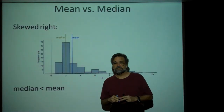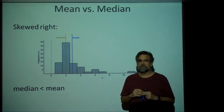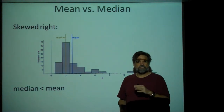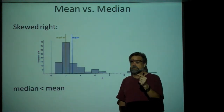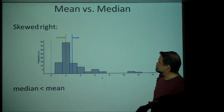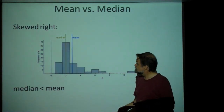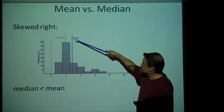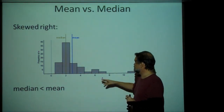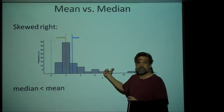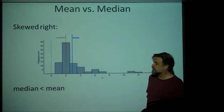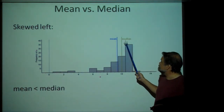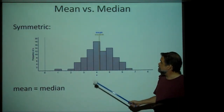We've looked at two ways of describing the center of a distribution: the median and the mean. Usually they're close together, but it's important to notice when one is bigger than the other. Here we have a distribution that is skewed right — there's a tail going off to the right. The median is shown by the yellowish line and the mean by the blue line. As the tail pulls out, the mean goes in the direction of the tail. When something is skewed right, the mean is always bigger than the median. When it's skewed left, the median is bigger than the mean. If it's symmetric, they're exactly the same value.